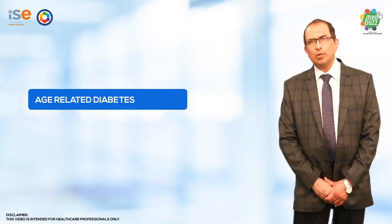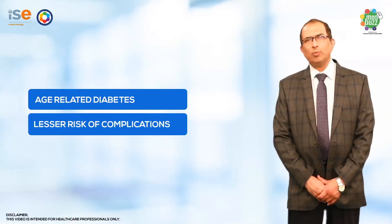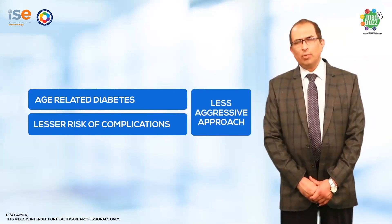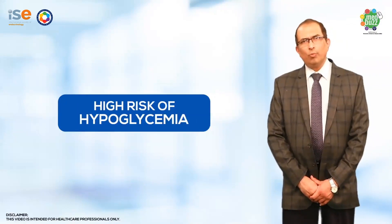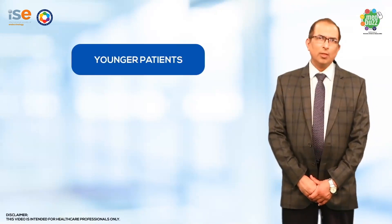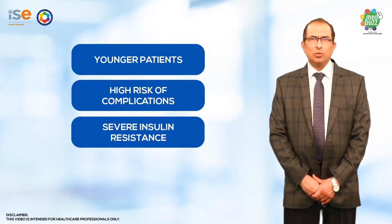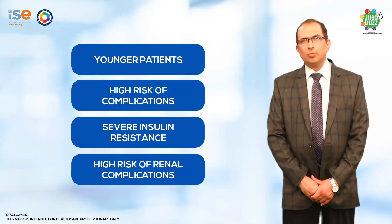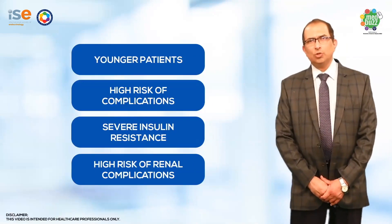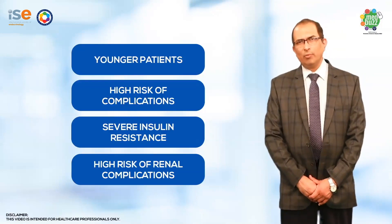We could be less aggressive in those who have age-related diabetes, who are particularly old and at lesser risk of having complications — by being very aggressive we may actually put them at high risk of hypoglycemia. So we can focus on patients who have a higher risk, who are younger, who have severe insulin resistance, and have a high risk of developing renal problems. We can address these issues earlier on and prevent such problems in them.